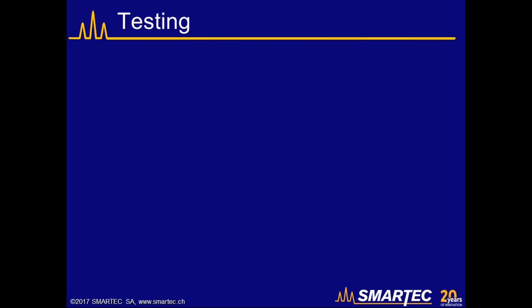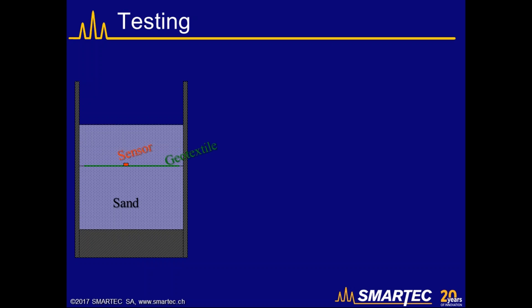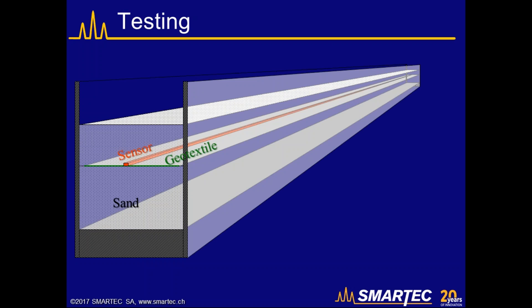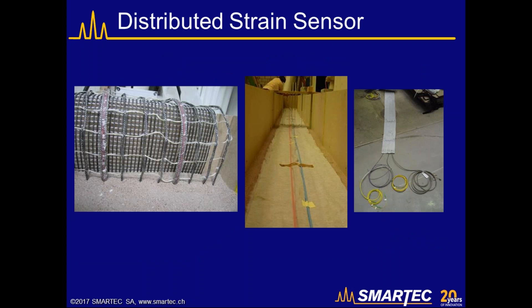To demonstrate the technology, I will first go through an example of laboratory tests. We installed the sensing cable on a geotextile in a sand bath and imposed a vertical controlled settlement in the center of the sand container to simulate a very small movement in a well-defined area. The sensors were laid on the first layer of sand, then covered with more sand, with the smart profile installed inside the sand itself.